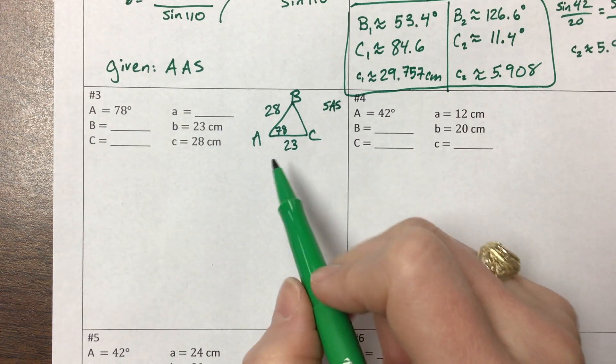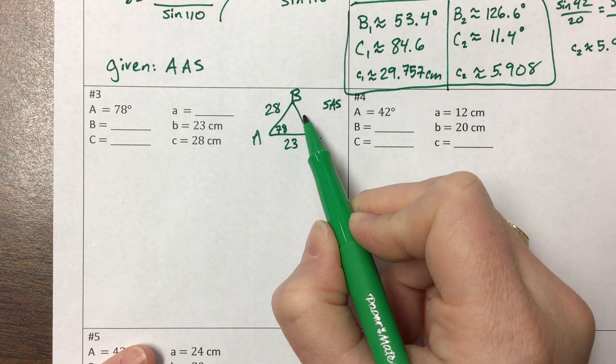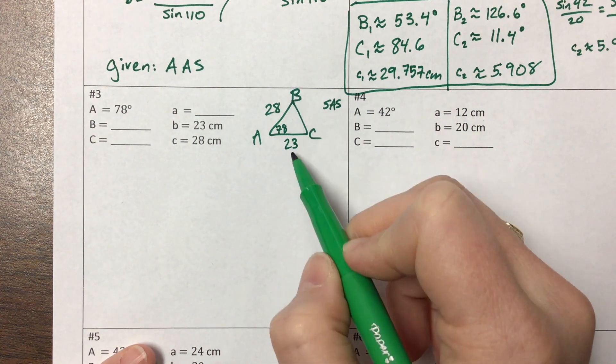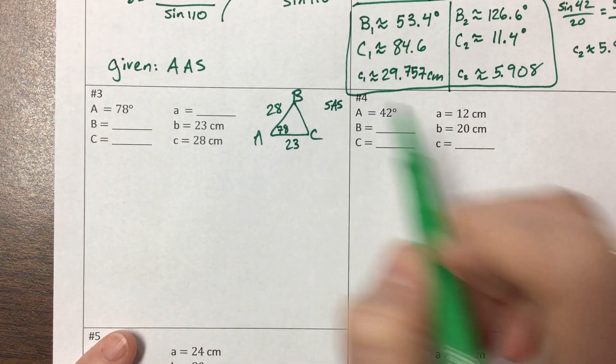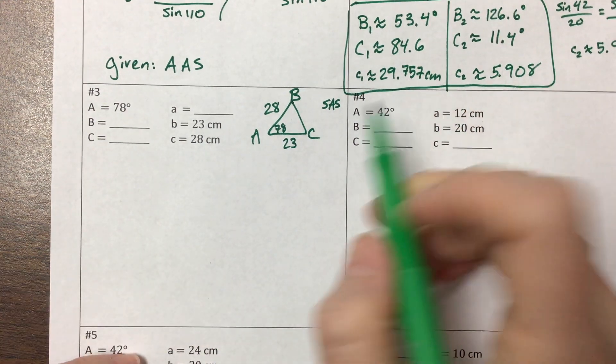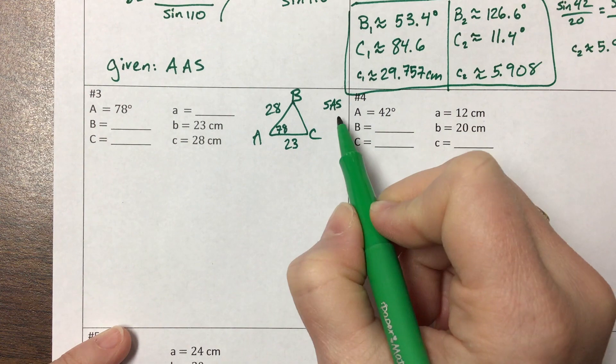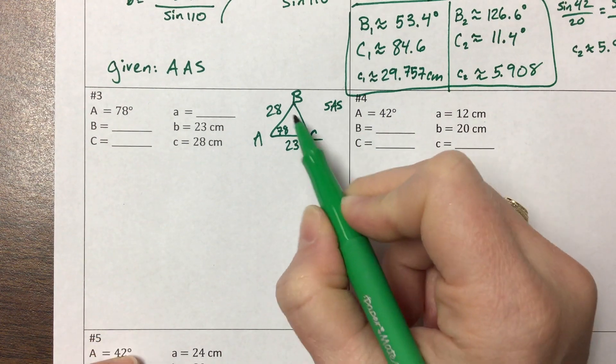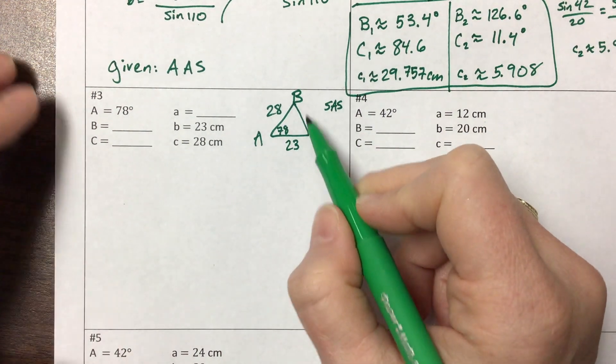I can't do law of sines. Sine of A over we-don't-know-A equals sine of we-don't-know over 23. That's too many unknowns. So what I want to do is use the law of cosines instead, and I'm looking to find this side length.